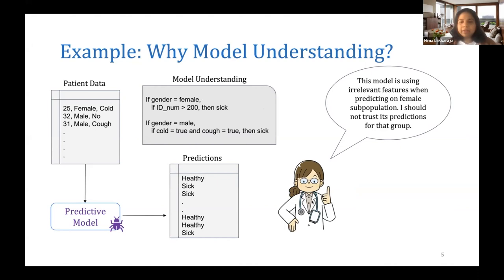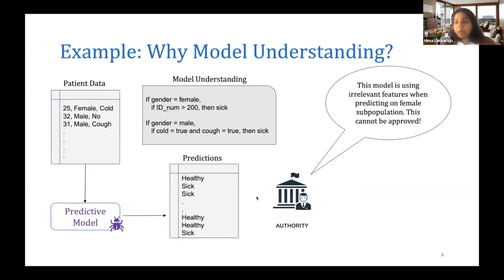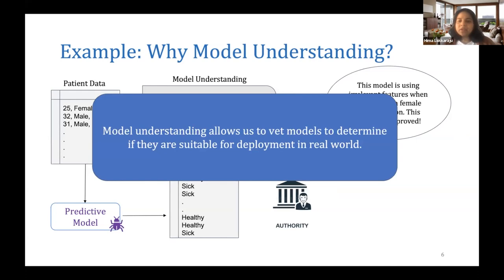So she should not trust the model on female patients. If a similar understanding was available for a regulatory authority which determines if a model is ready to be deployed at a broader scale, then looking at this they can determine that the model is using irrelevant features on at least half of the population, so it's not ready for broader deployment yet. In this case, model understanding is helping us vet models to determine if they're suitable for deployment in the real world.